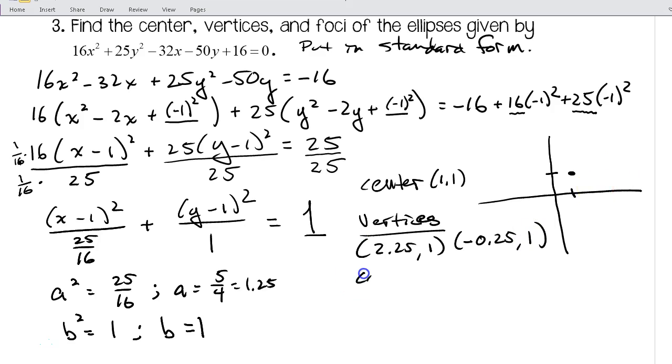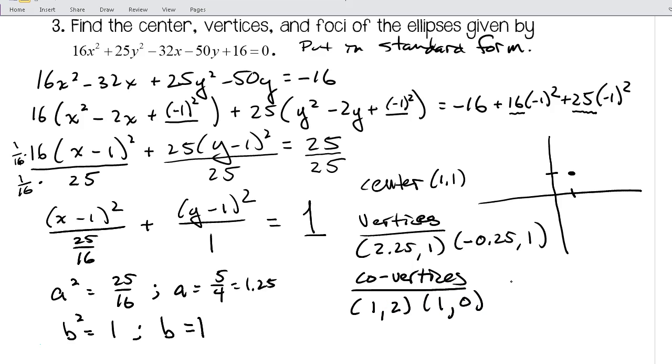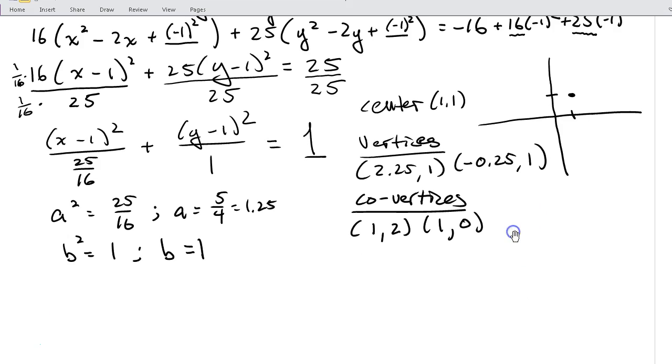And for my co-vertices, I'm going to go up and down 1 because my b value is 1. So I'm going to go to my center which is 1 and then go up to 2, and I'm going to go to my center and go down 1, which would put me at 0. There's my co-vertices.